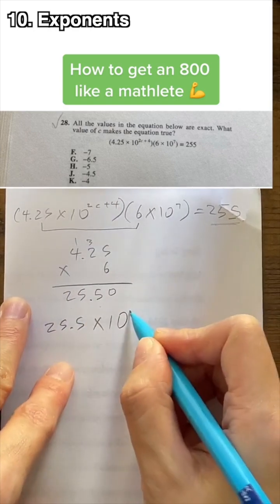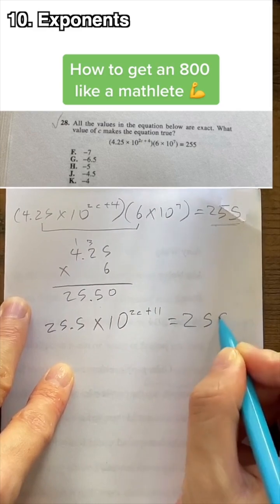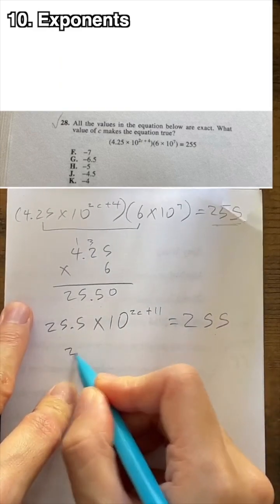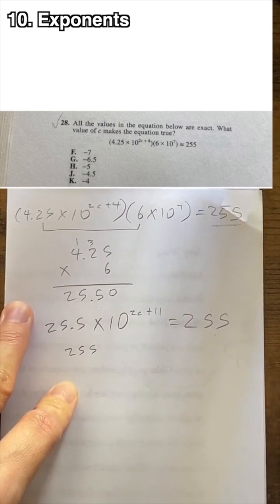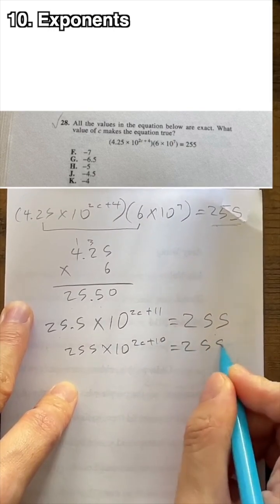So 25.5 times, and then we want to combine these factors because they're similar. We want to make things as simple as possible before solving. And then we want to make this look the same. So we take a 10 from here. So now we have 255 times 10, 2c plus 10 equals 255.